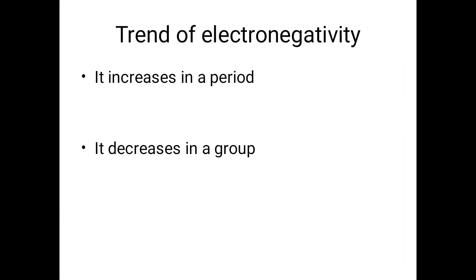Electronegativity increases across a period because the size decreases, and it decreases down a group because the size increases. We end the discussion with the hope that reading the topics thoroughly from the book, practicing daily exercises and chapter-end exercises, and watching all videos from this chapter will be helpful in understanding the chapter completely. Thank you class, God bless you.